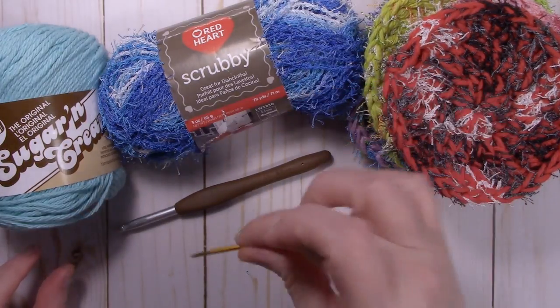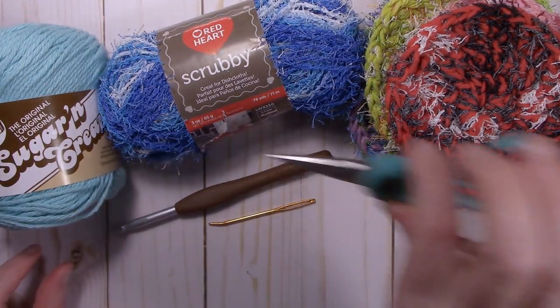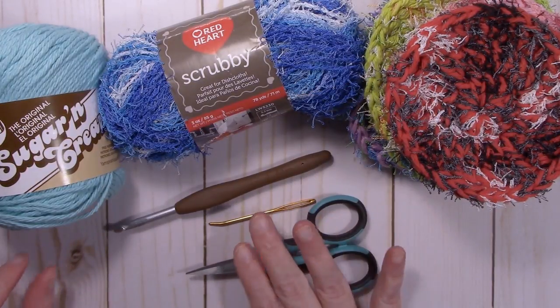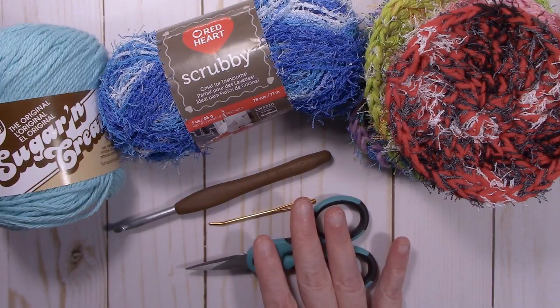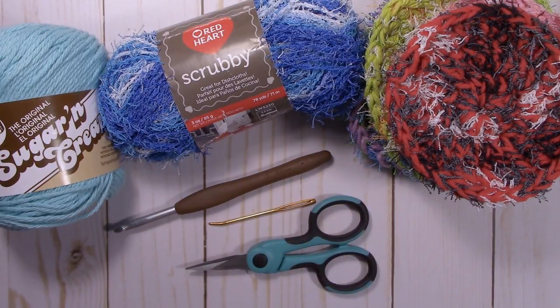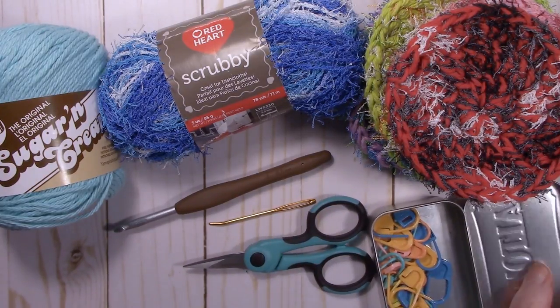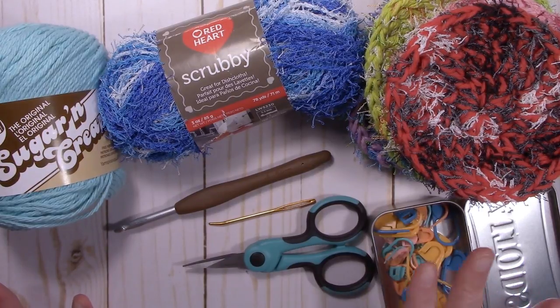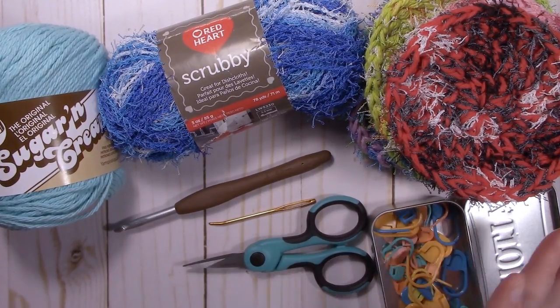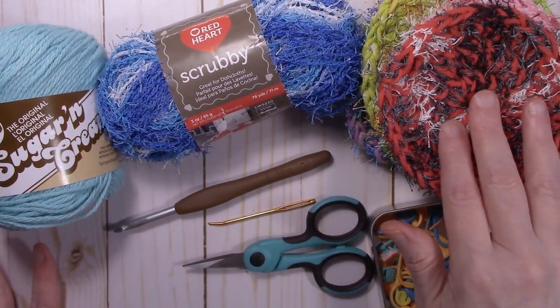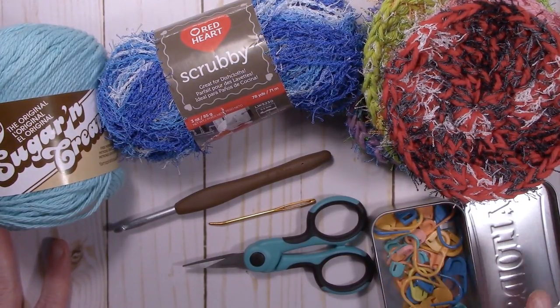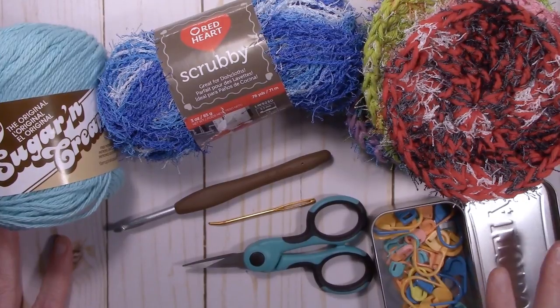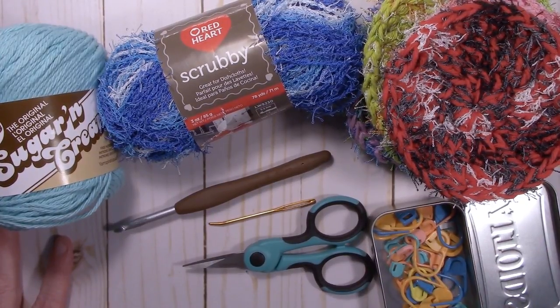You will need a yarn needle to weave in your ends and a pair of scissors. Now if you have trouble finding your stitches, you might want to have some stitch markers. That is completely up to you. I don't use stitch markers when I'm making scrubbies, but if you need them, you should have some on hand just in case. So once you have all your supplies, let's get started.